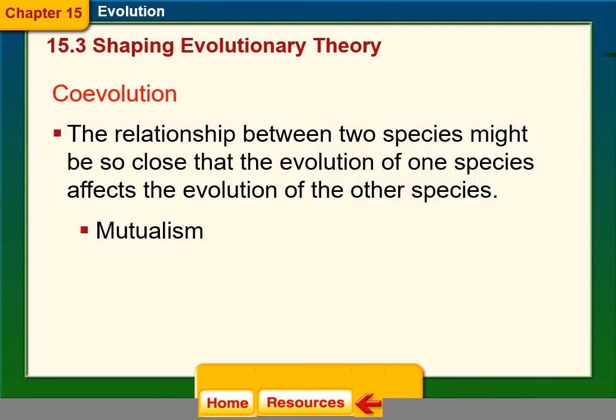Coevolution occurs when the relationship between two species is so close that the evolution of one affects the evolution of the other — for example, mutualism. Another example is the coevolutionary arms race between animals and plants, such as plants that produce capsaicin to protect their fruits from mammals, while birds cannot taste capsaicin and so can still disperse the seeds.